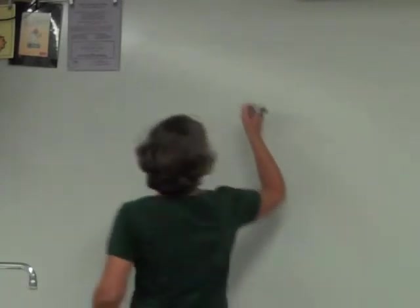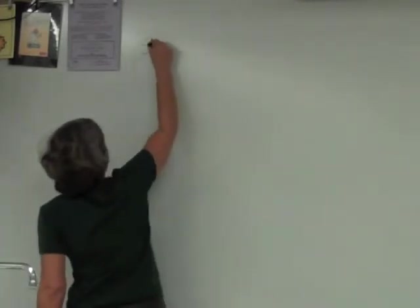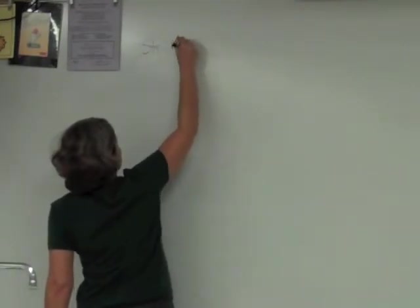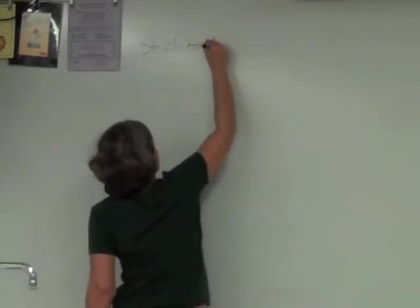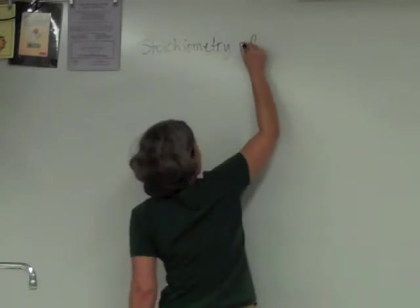Today we're going to do our last lesson for chapter 4 before we take a test. So what we're going to do is look at some stoichiometry specifically of precipitation reactions. Stoichiometry of precipitation.